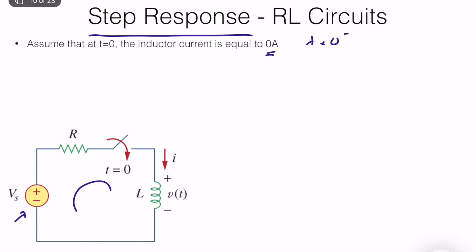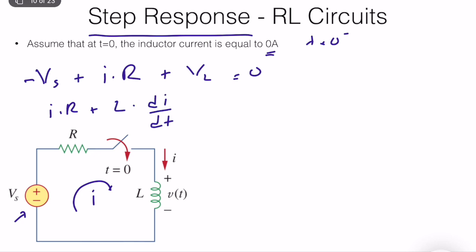Let's analyze the circuit and write a KVL. So this is I. Minus Vs — Vs is constant and it is the voltage source — plus I times R, plus VL is equal to zero. V of T is the inductor voltage. So we know that this is equal to I times R plus L times dI over dt is equal to Vs.